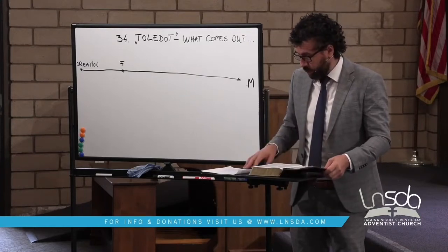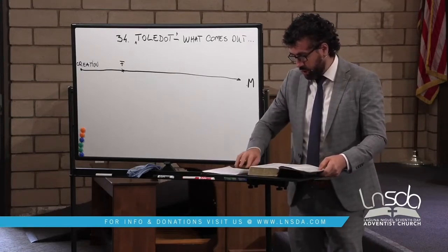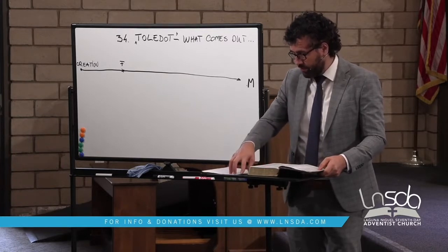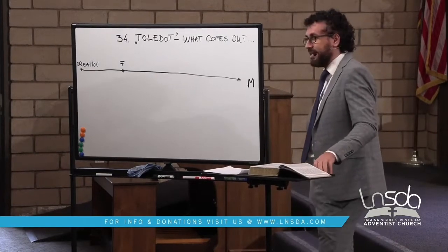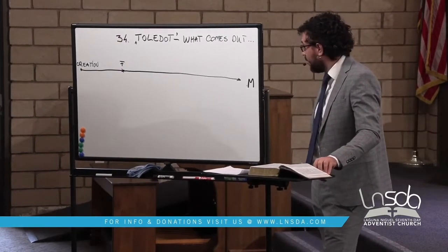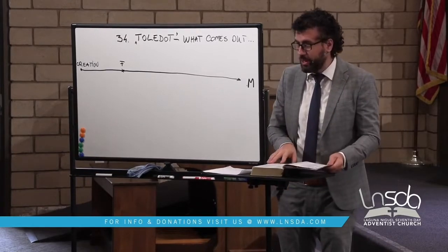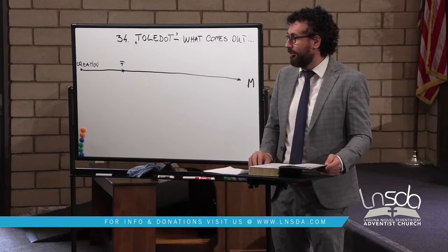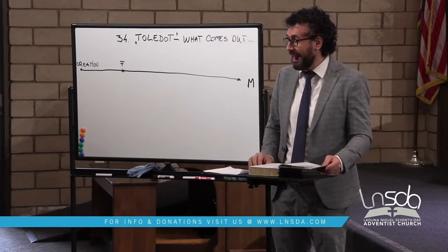This morning we are going to do a review of all that we have seen in the book of Genesis — from the beginning to the end, all 50 chapters. We are wrapping up Genesis and then starting Exodus.